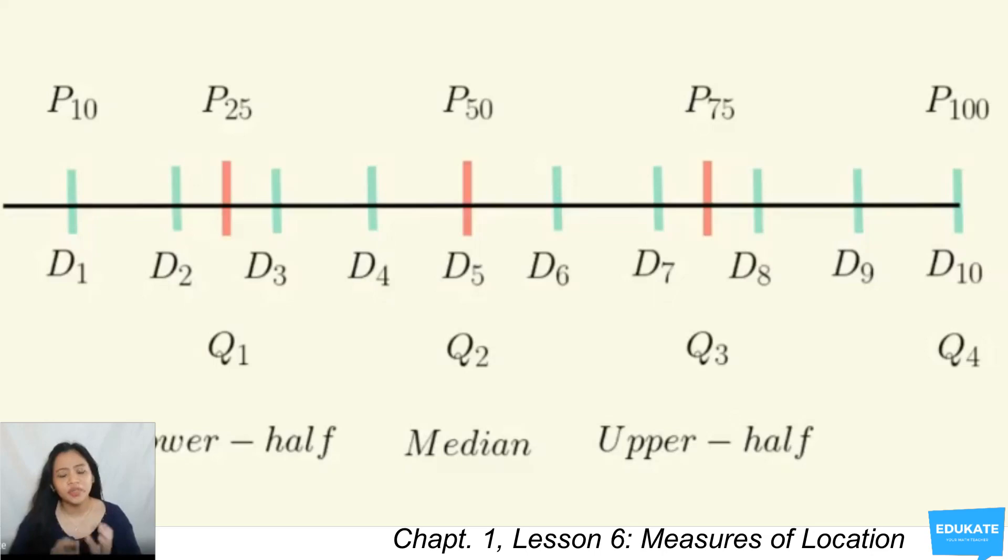The picture is showing that the median of the data is also quartile 2, while in relation to percentile, it's the 50th percentile. Quartile 1 is also the same as the 25th percentile, while quartile 3 is the 75th percentile. Note as well that quartile 1 is the median of the lower half, while quartile 3 is the median of the upper half.